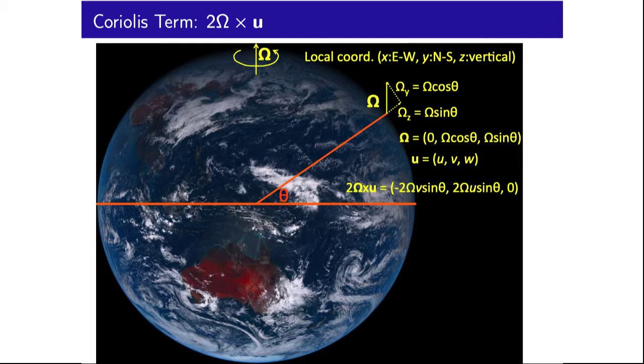So with these scalings, 2 omega cross u approximates to negative 2 omega v sine theta in the x, 2 omega u sine theta in the y, and 0 in the z.